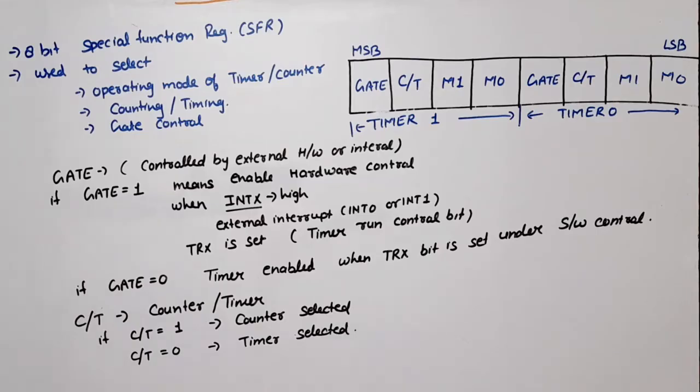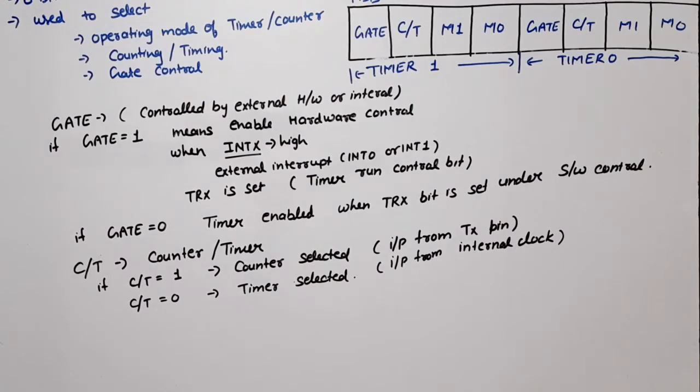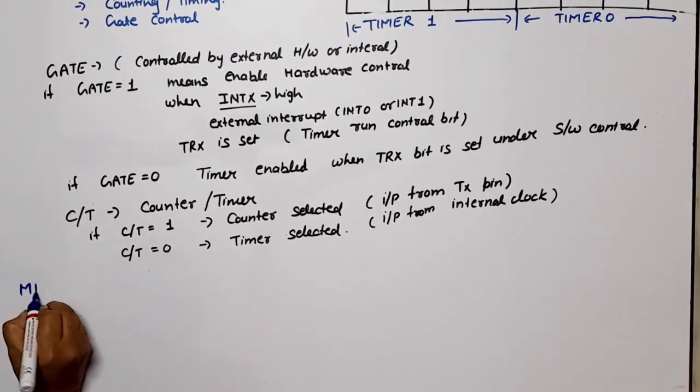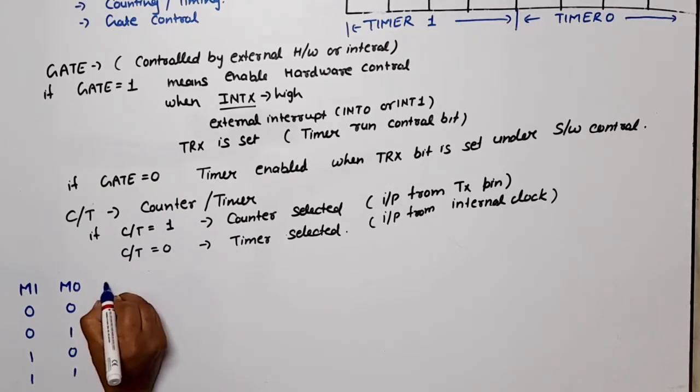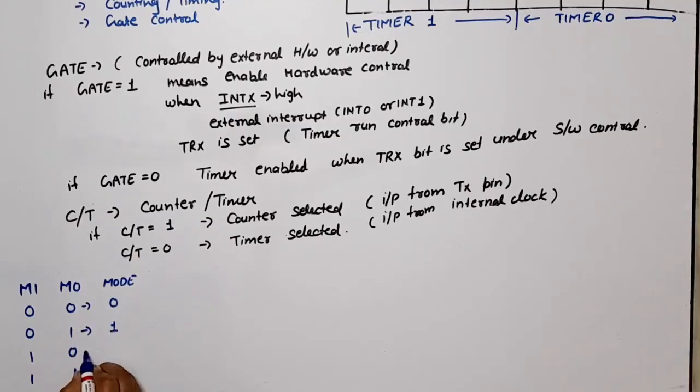Now let's look at modes. Modes are selected by M1 M0 pins. M1 M0 pins means what are the possible combinations? If 0 0 then mode 0, if 0 1 then mode 1, if 1 0 then mode 2, if 1 1 then mode 3.